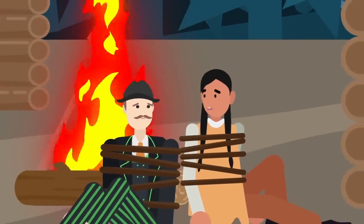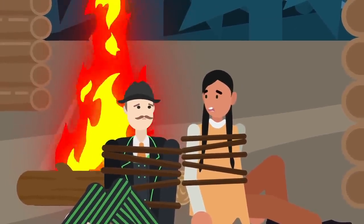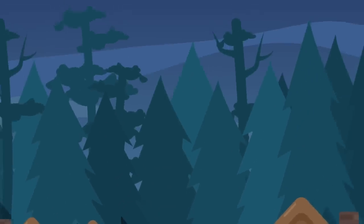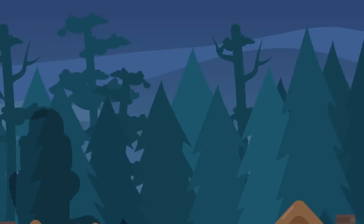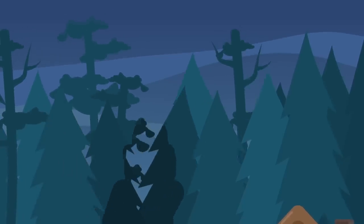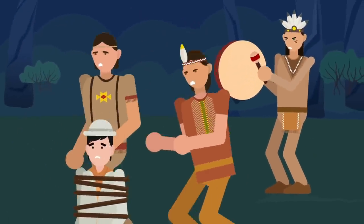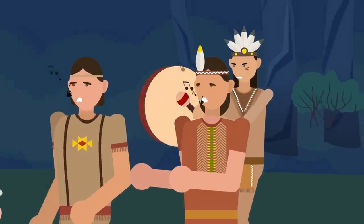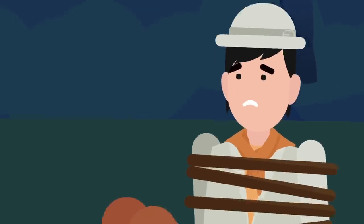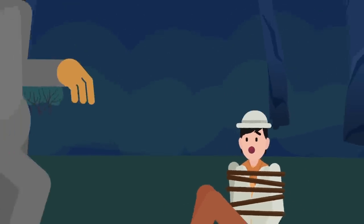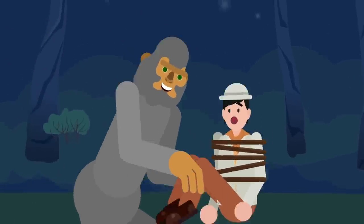As it turns out, the creature that this tribe worshipped was the very same one Lord Blackwood and the others were trying to find, a particularly large and aggressive Sasquatch. Each night, a different sacrifice was made to the Sasquatch. The victim would be placed near a forest clearing while the tribe played a primal song, and the Sasquatch would emerge from the trees to devour its prey.